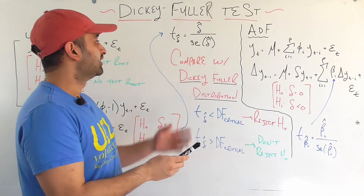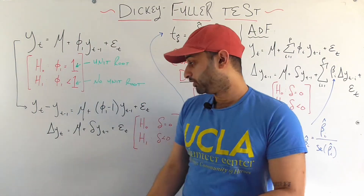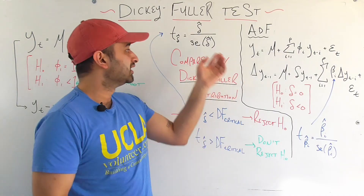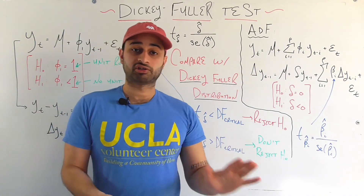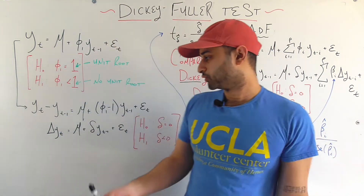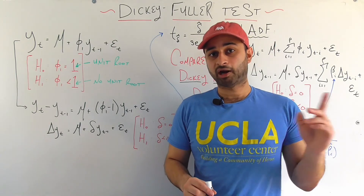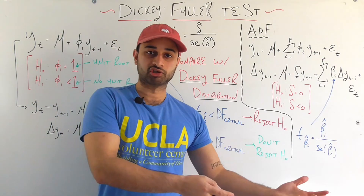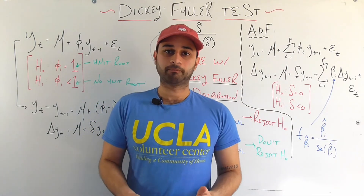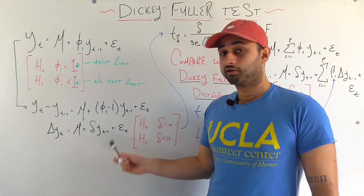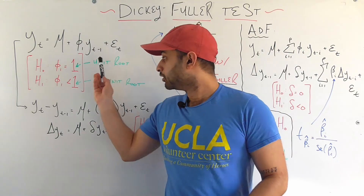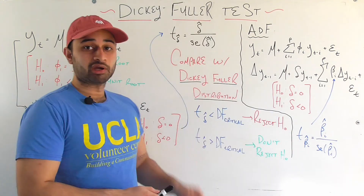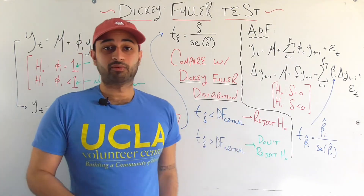Explicitly, the t-statistic for delta-hat — the coefficient in front of the lagged time series — is equal to delta-hat divided by the standard error of delta-hat. Nothing special here; you're computing the same t-statistic you would in any regression. The only difference is that instead of comparing that t-statistic against the normal t-distribution, we compare it against the Dickey-Fuller distribution, because under the null hypothesis y_{t-1} is non-stationary with a unit root.